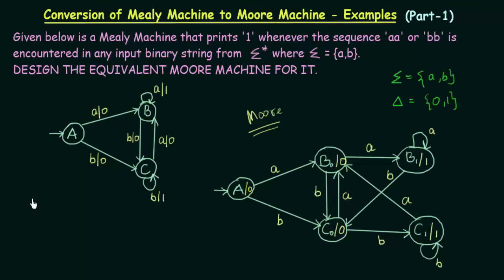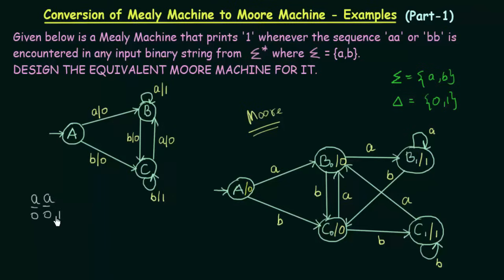Let's take a few examples to verify. For input string AA: starting at state A which prints 0, on input small a it goes to B0 which prints 0. On the next input small a, B0 goes to B1, which prints output 1. So when AA is encountered, 1 is printed.